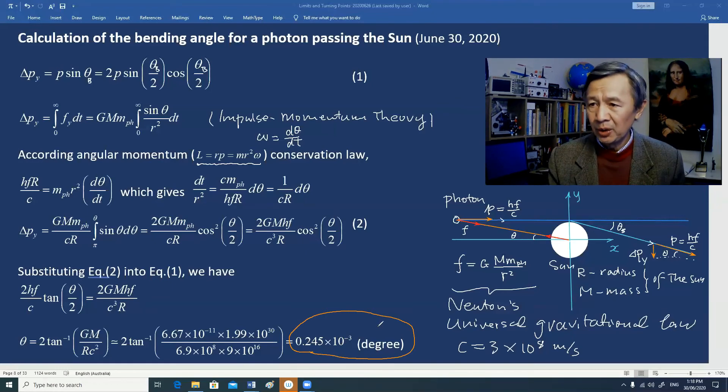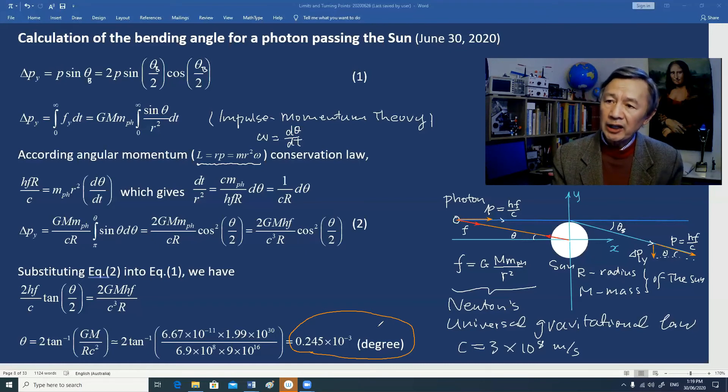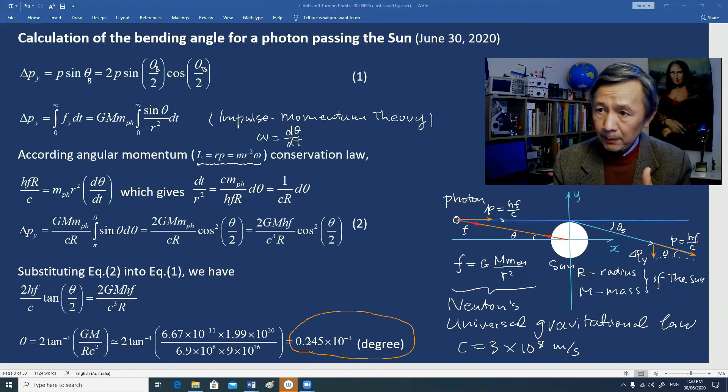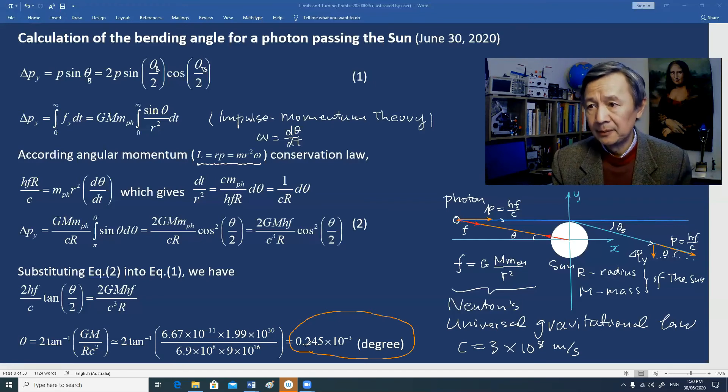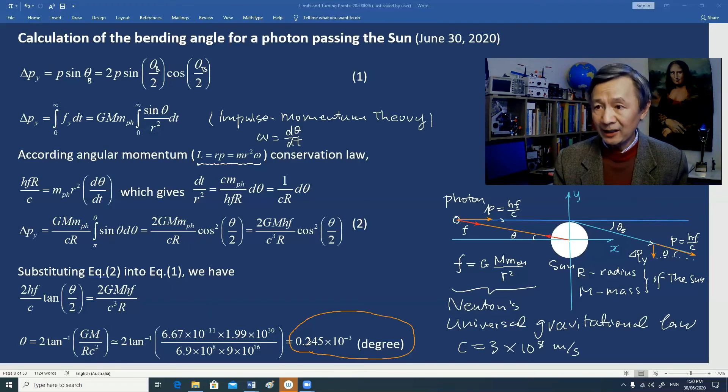This is identical to the result derived by Einstein using his general relativity. This simple calculation implies that one can explain the bending of the light wave by the sun without using Einstein's general relativity. Instead, we use Newton's law on universal gravitational interaction, plus Einstein's special relativity and the energy formula by Max Planck.